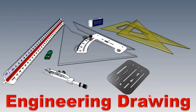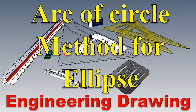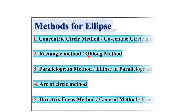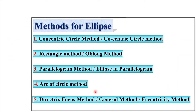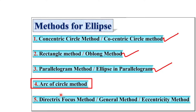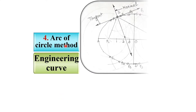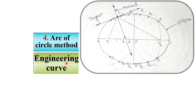Welcome to my engineering drawing playlist. Today I will be explaining the arc of circle method for ellipse. These are the different methods of the ellipse. In the previous video, we discussed the concentric circle method, rectangle method, and parallelogram method. Now it's the turn for the arc of circle method, so let's start.